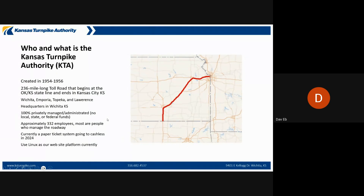We're in the process of moving to a cashless tolling system, where we have zones within the turnpike. When you cross a zone, that's the amount charged to your account — no ticketing system. We're going to use transponders, essentially stickers you put on your car, which run your tolling system and calculate how much you pay per zone.